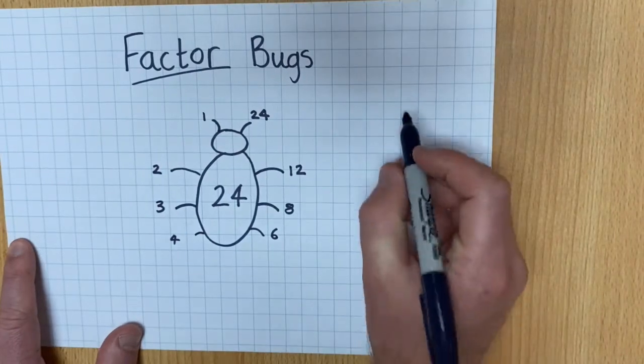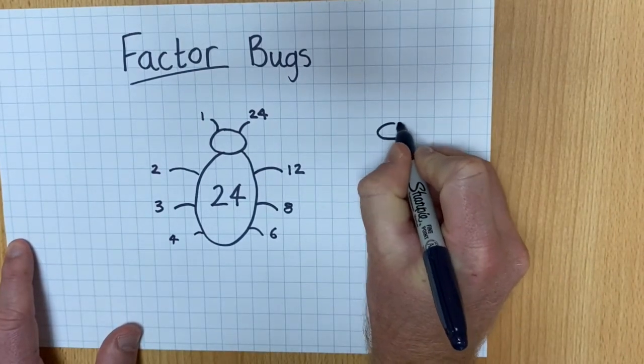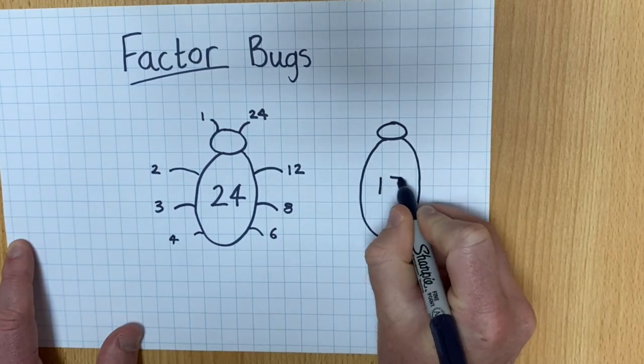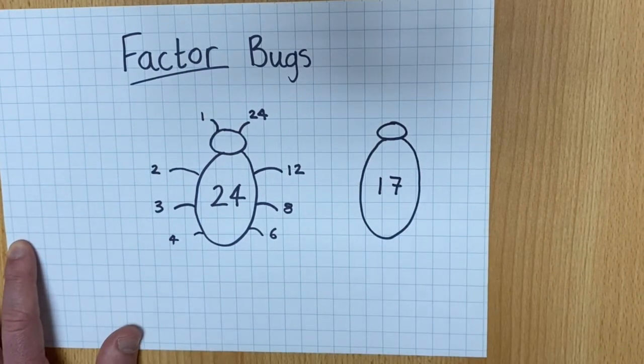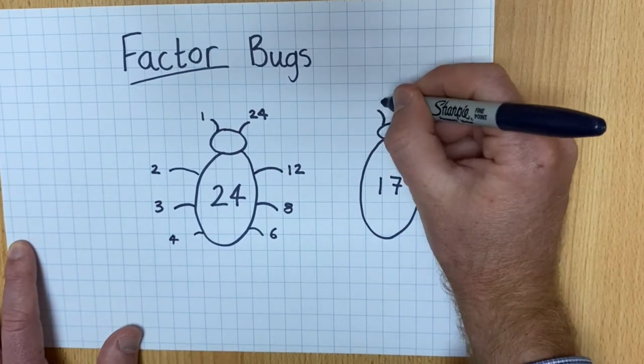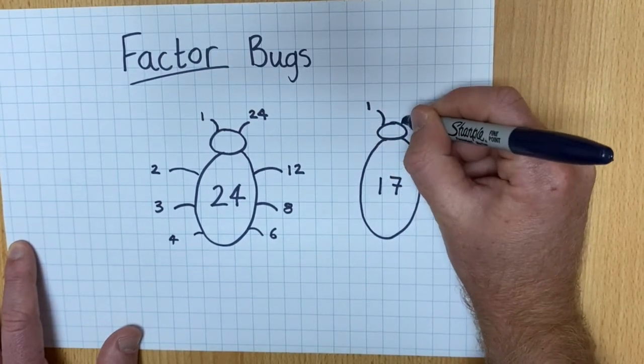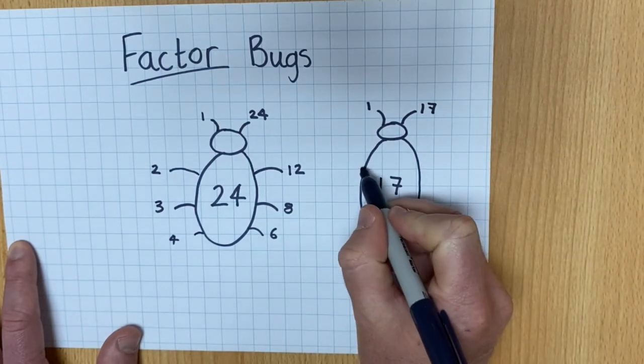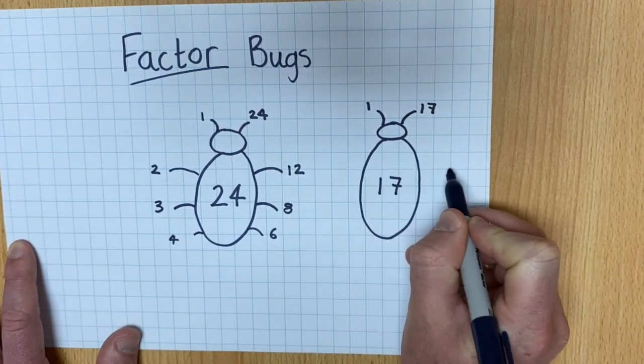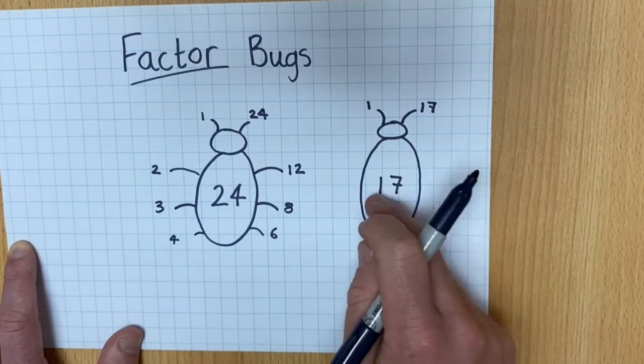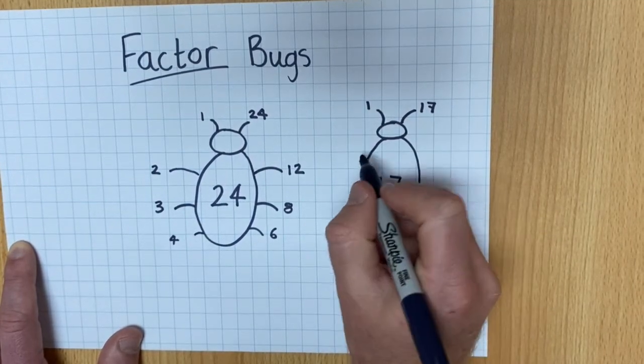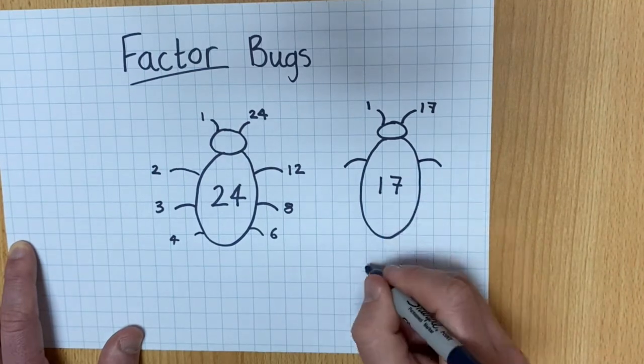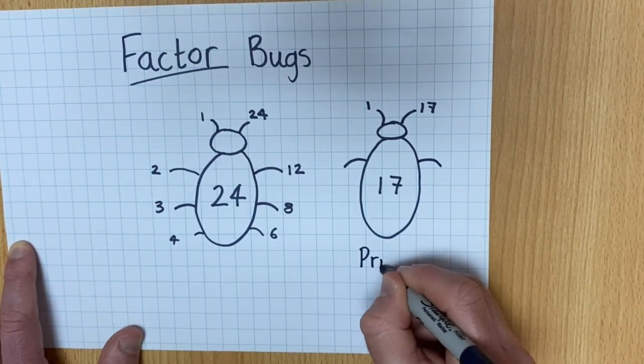Now, if you have a number like 17, I'm going to start my factor bug with 1 and 17. If you can't think of any numbers that multiply together to make 17, or if you can't think of any factors, then that means that the number is a prime number.